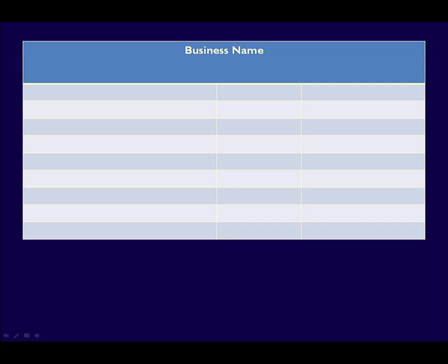Let's move on to the statement of cash flows. As always, the statement starts with the business name, followed by the name of the statement. Notice that this name is the statement of cash flows, not the cash flow statement. Then the date. Like the income statement and the statement of retained earnings, the statement of cash flows is for a period of time, and the date reflects that.